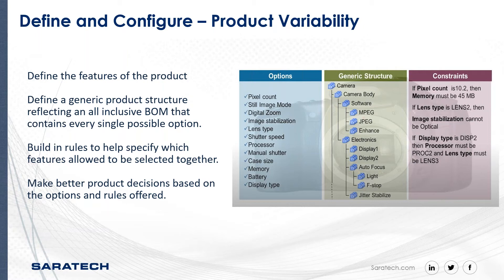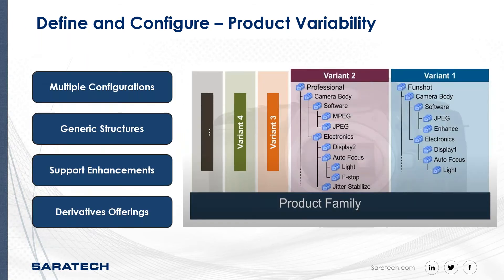This helps customers or field engineers make better product decisions based on the options and the rules defined. Here we have defined some constraints for the various camera options, and we have applied some generic product structure. All of these help define a product family from which you can support frequent enhancements, derivative offerings, and much more.